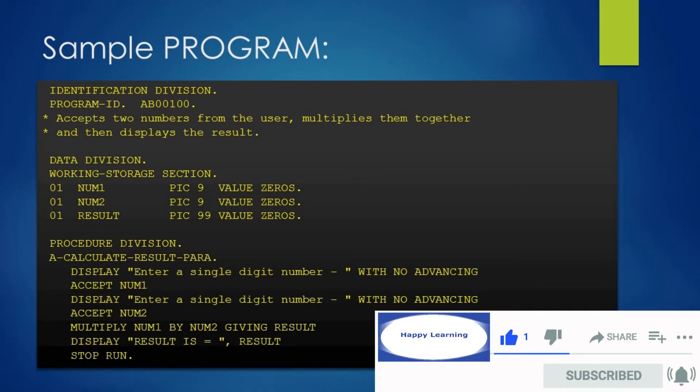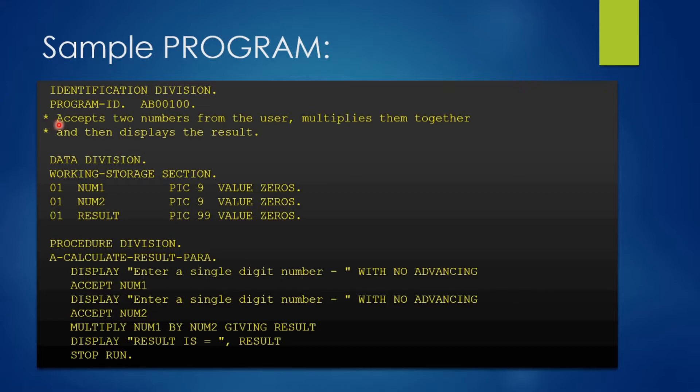After the program name, we will give a comment. Here we have given a comment saying it accepts two numbers from the user, multiplies them together, then displays the result. It is a good practice to use comments in your program and let the reader know what your program is doing.